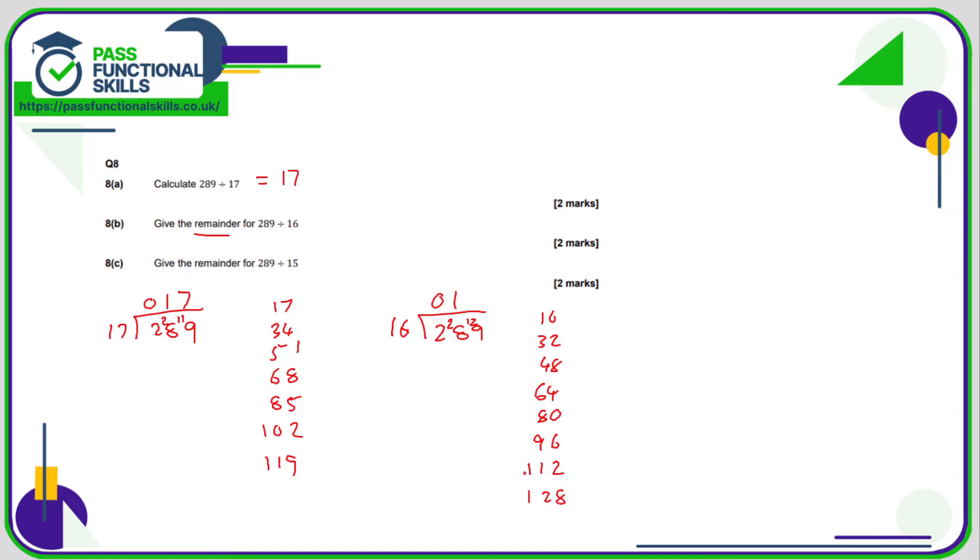The next number will exceed 129, so no point going there. 1, 2, 3, 4, 5, 6, 7, 8. So eight 16s are 128. We've got 129, so there's a remainder of one.